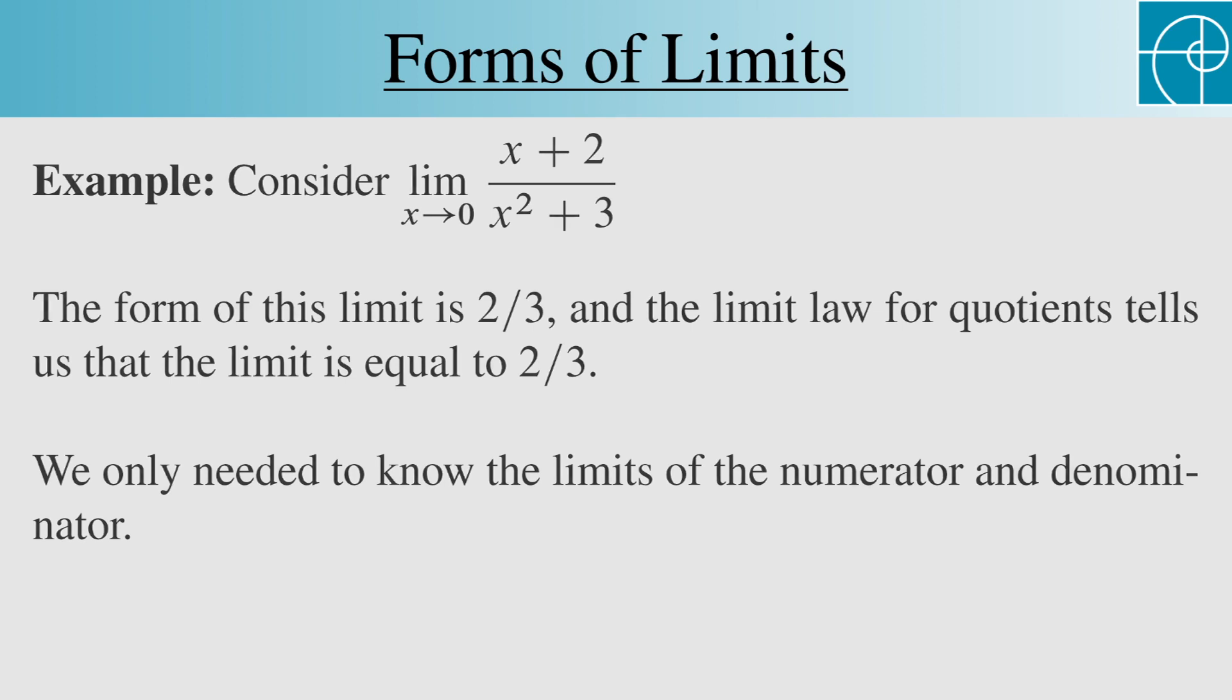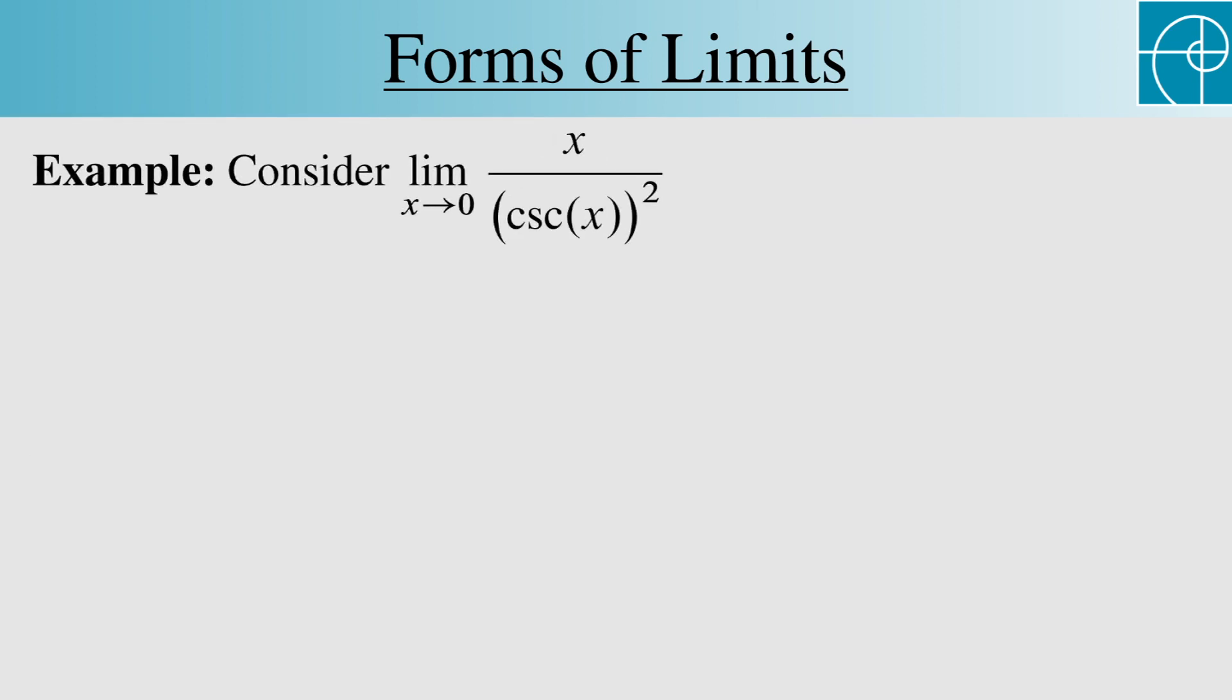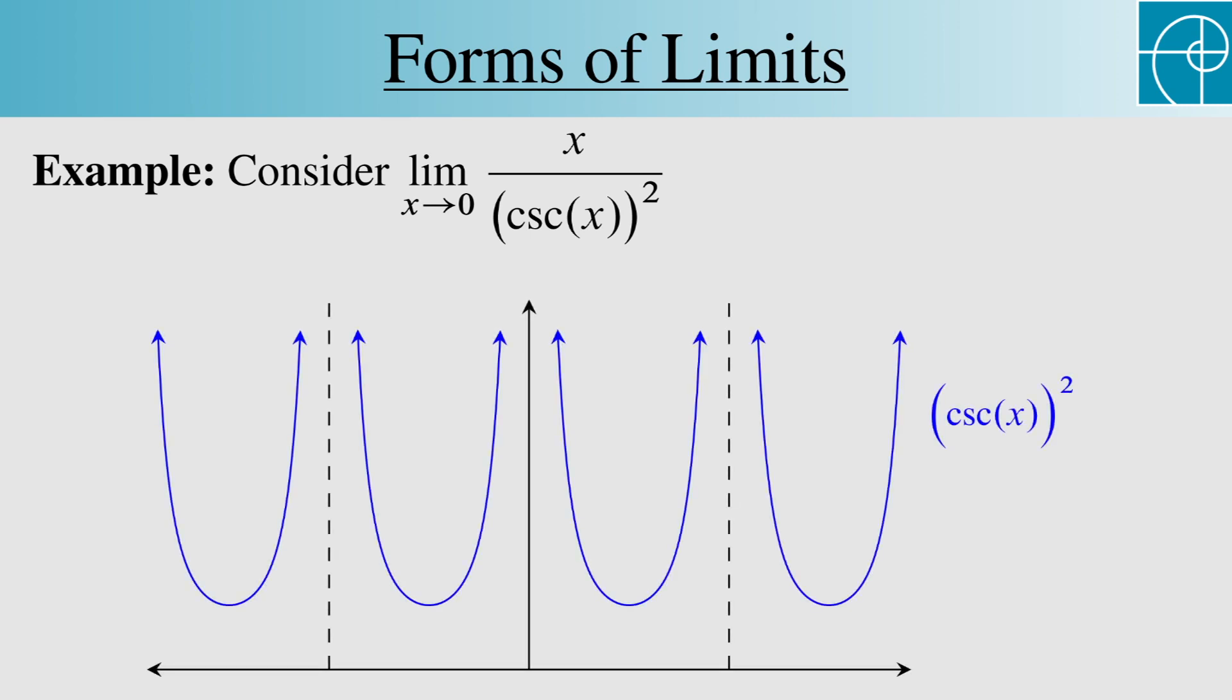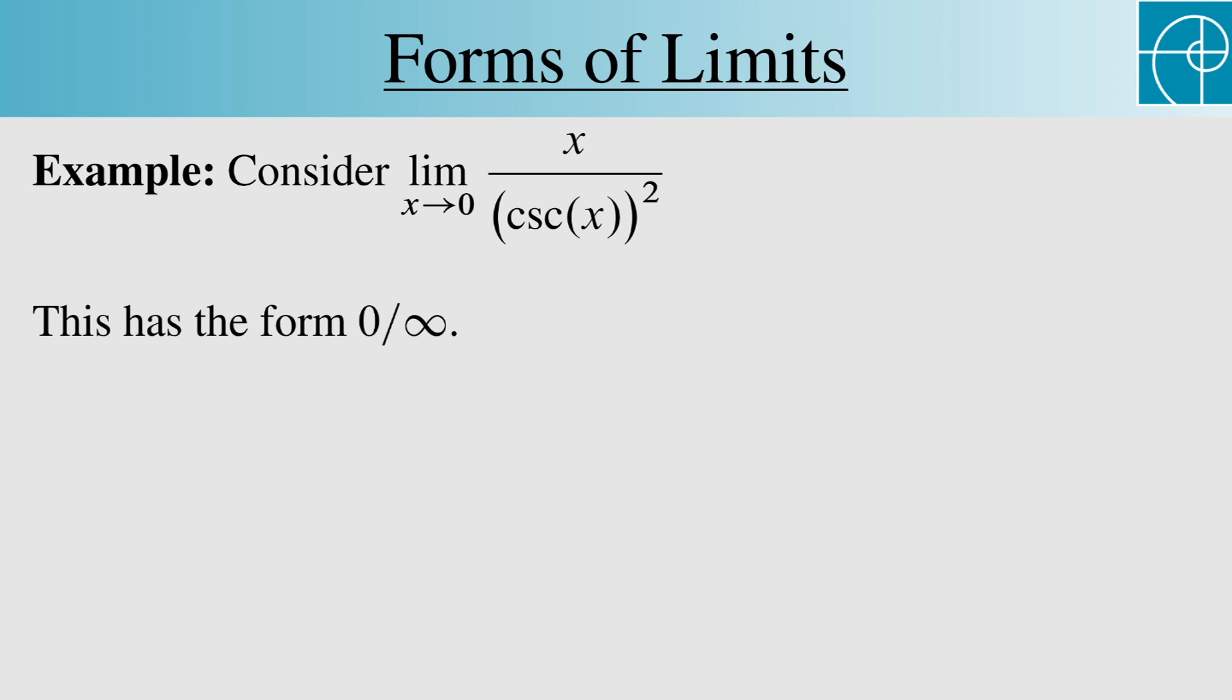Let's look at another example. Consider the limit as x approaches zero of x over cosecant x squared. Here's the graph of cosecant x squared in case you've forgotten, from which we can see that the limit of the denominator is infinity. This means that the form of the limit is 0 over infinity.